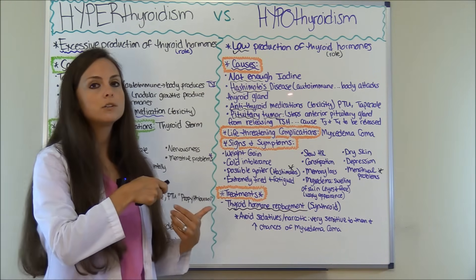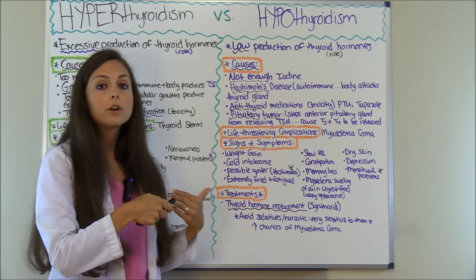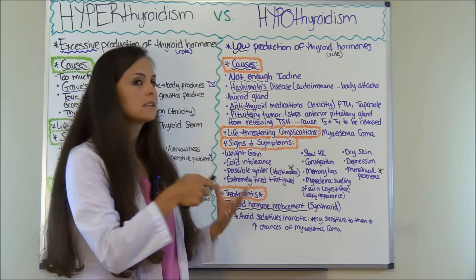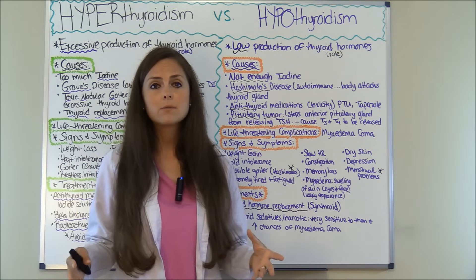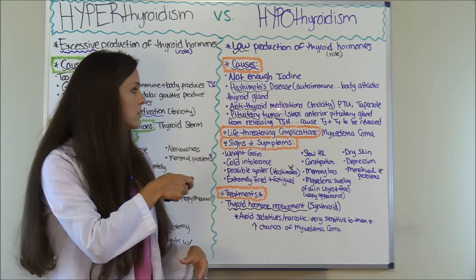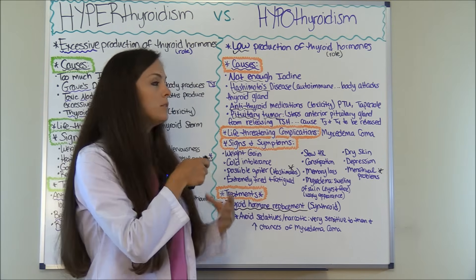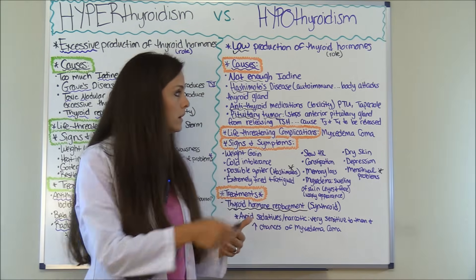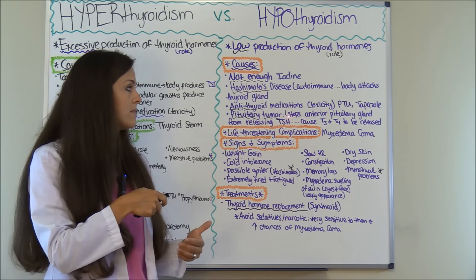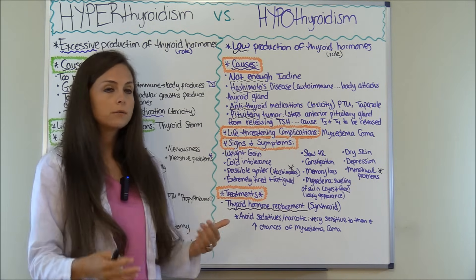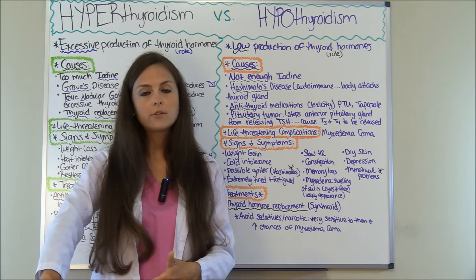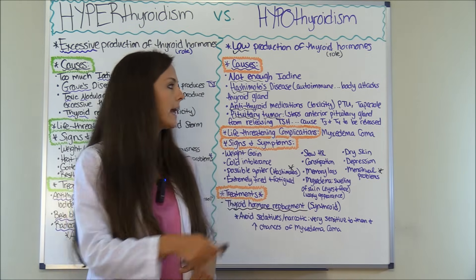For hypothyroidism, one cause is not having enough iodine in your diet. Another cause is Hashimoto's disease, an autoimmune condition where the body attacks the thyroid gland, damaging it so it no longer produces thyroid hormone. Another cause is taking too much antithyroid medication, such as PTU or Tapazole. Additionally, a pituitary tumor can stop the anterior pituitary gland from releasing TSH, so the thyroid gland is never stimulated to produce T3 and T4.